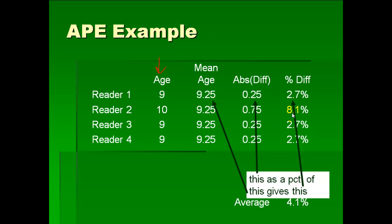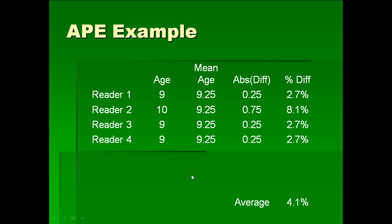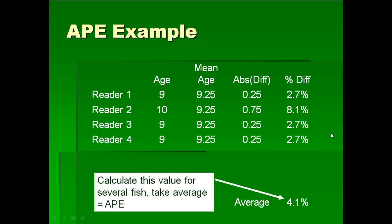So you notice that we do this calculation for each reader, and so that you can see for each reader you have their percent difference, how far they were from the average age turned into a percentage. And then if you take the average of that column across all readers, that's the APE, average percent error.